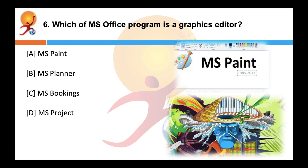Which MS Office program is a graphics editor? The correct answer is A — Microsoft Paint is a simple graphics editor that comes with all versions of Microsoft Windows. However, Microsoft Paint will soon be discontinued, at least in upcoming operating systems.